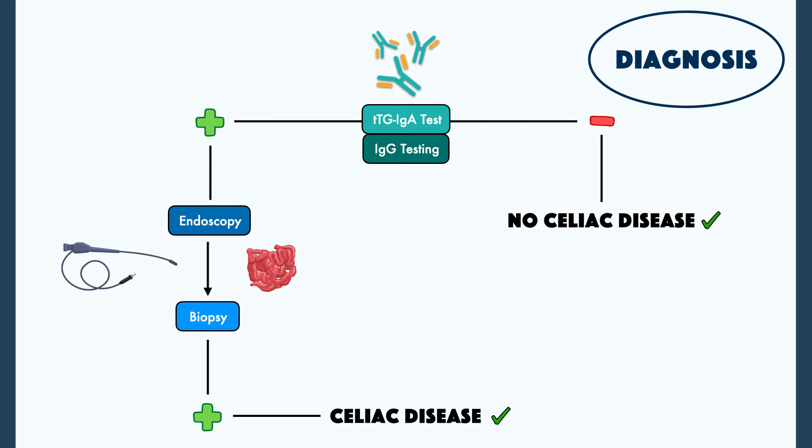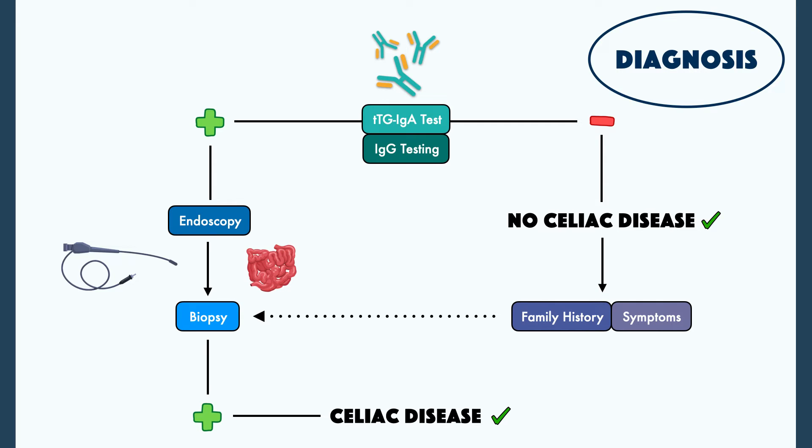A negative antibody test suggests a patient doesn't have celiac disease. However, as mentioned previously, there are some cases where there are false negatives. So, if there's a high suspicion that it's celiac disease, like a family history of the disease and the classic symptoms of it, a biopsy may still be pursued.